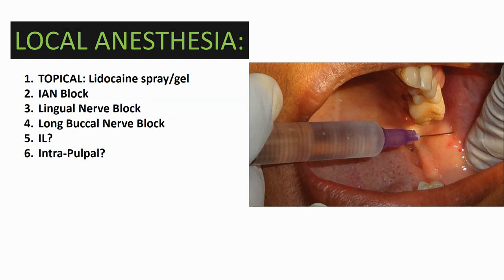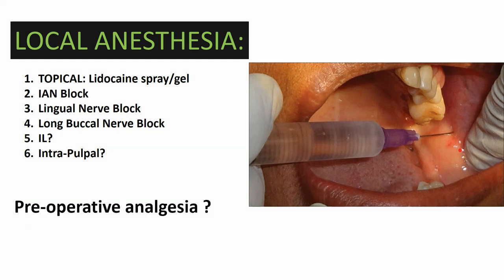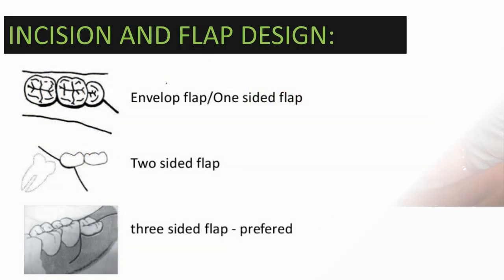The choice of local anesthesia includes topical anesthesia such as video spray or gel, inferior alveolar nerve block, lingual nerve block, long buccal nerve block, or other options such as intraligamental or intrapulpal injection.